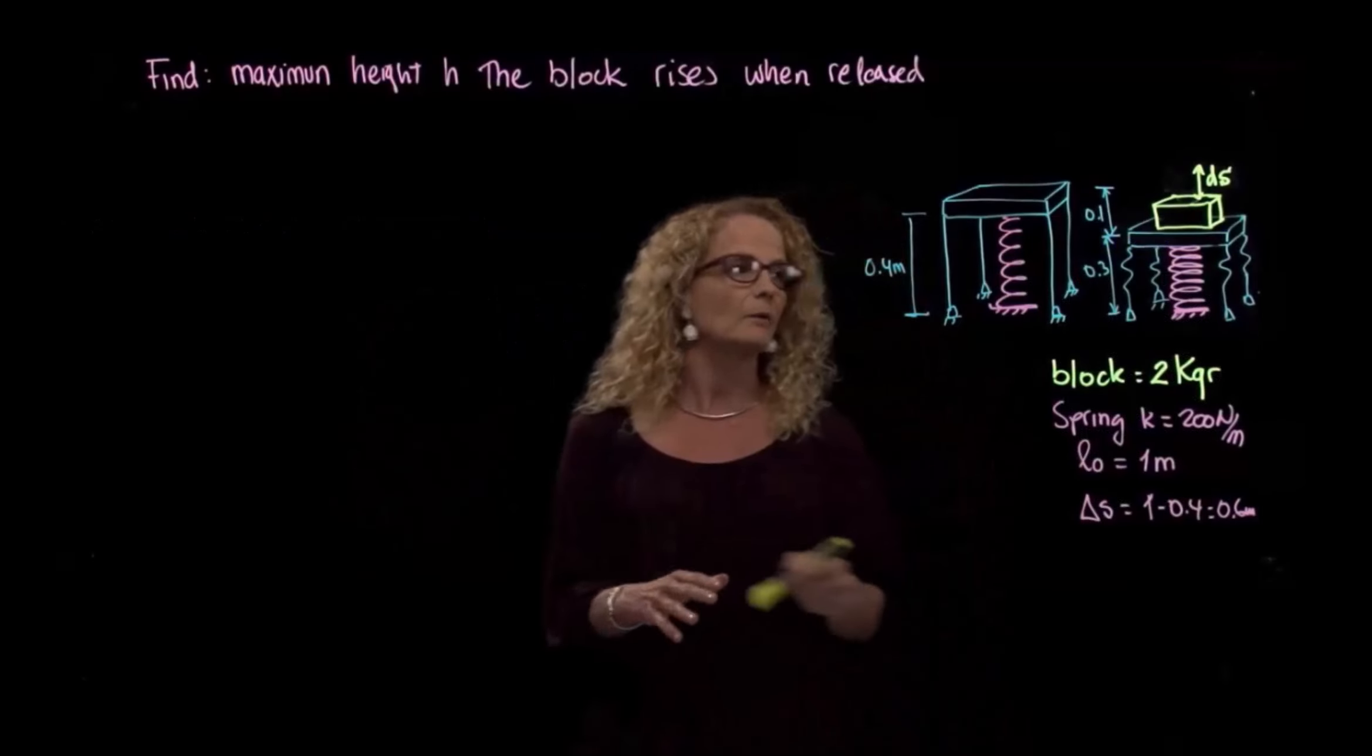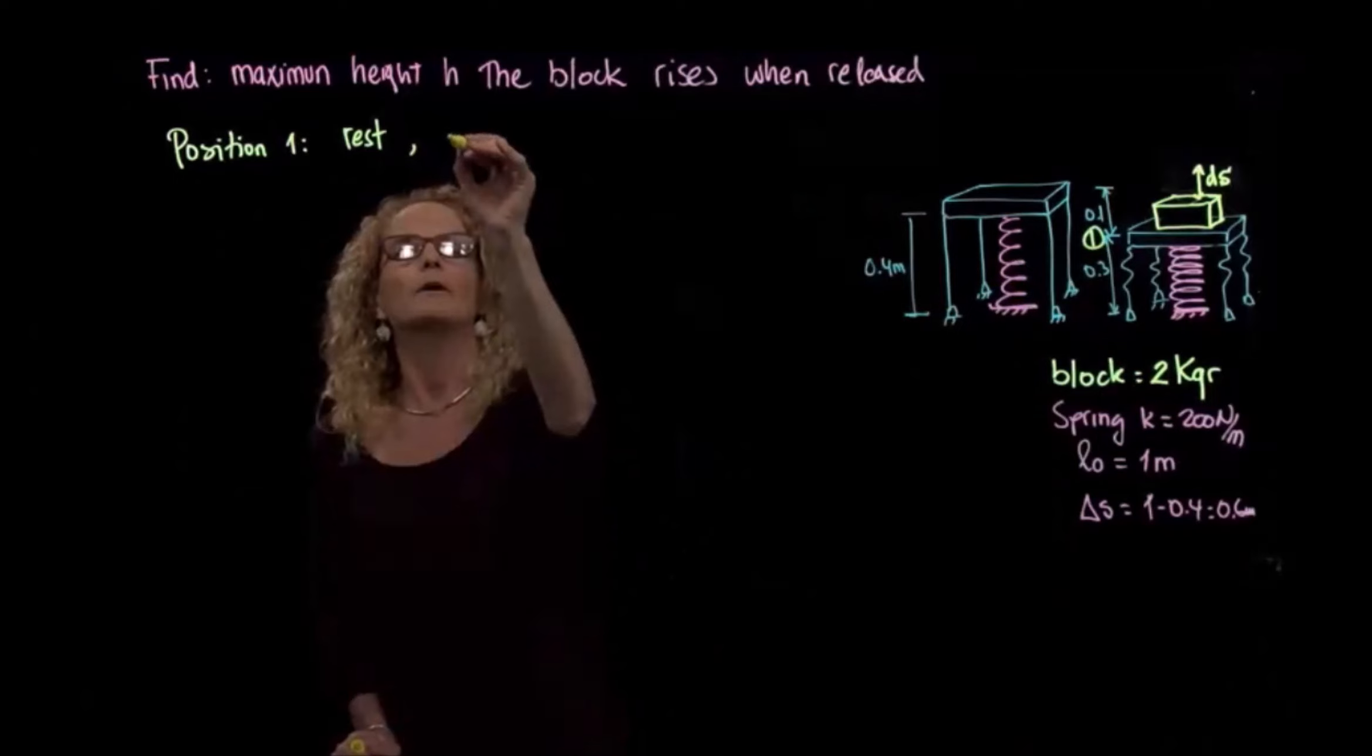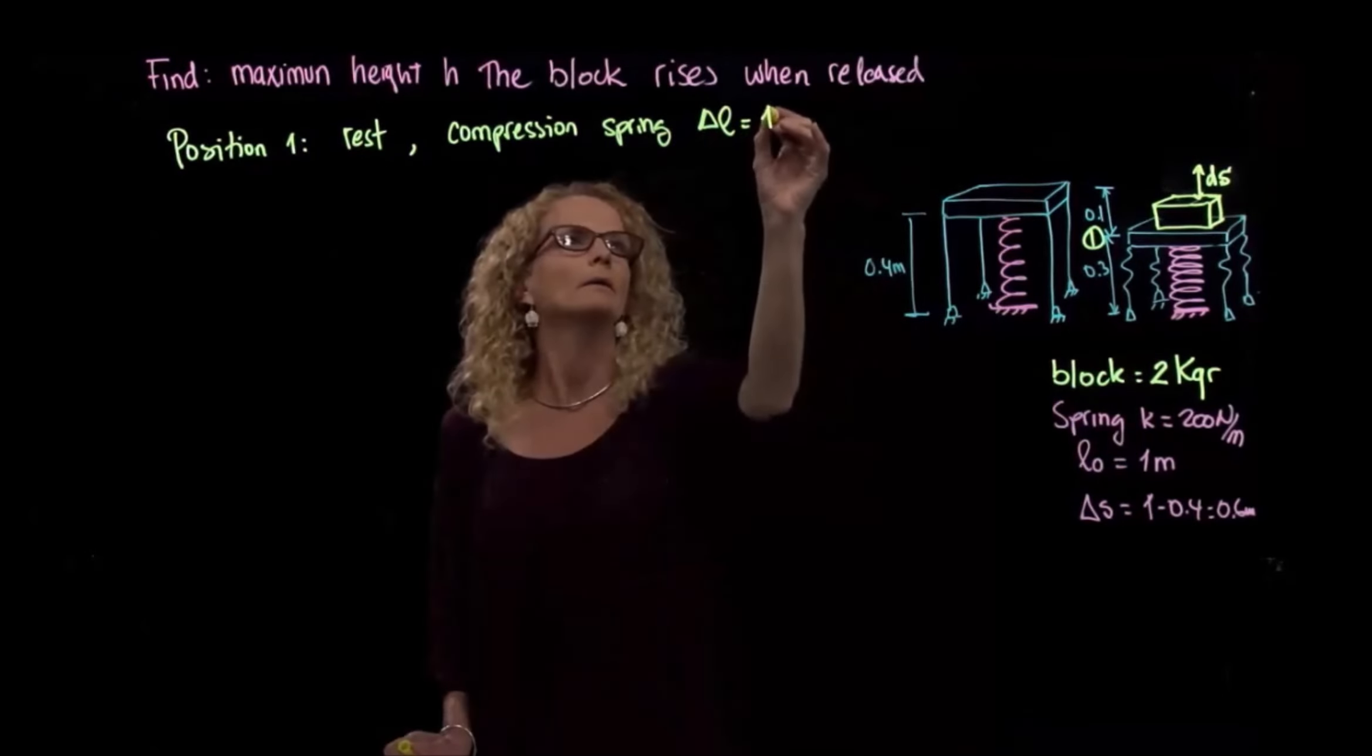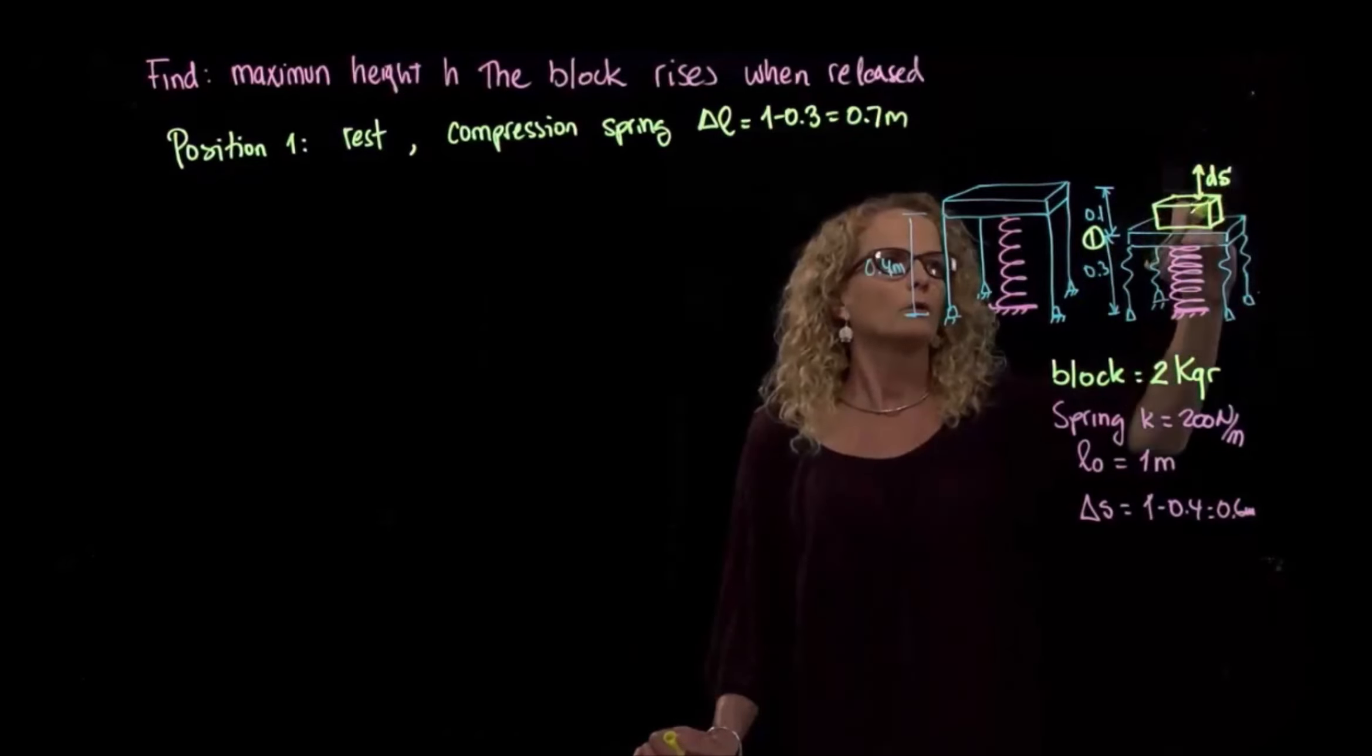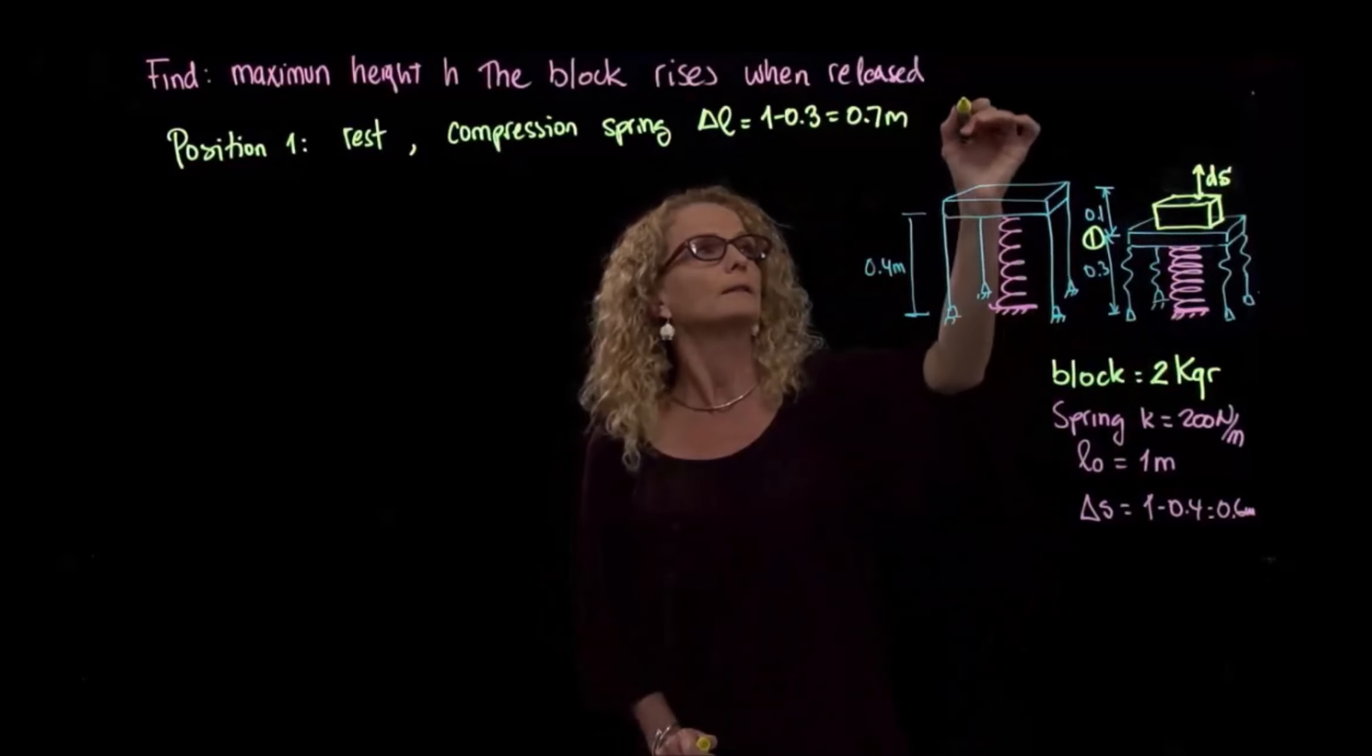So if we describe our positions, position one, we have rest, which is our position one, and we have our compression of the spring equals 1 minus 0.3, which is 0.7. So this is our position one because they are telling us that they compress the platform, and when they release, they want you to know the height of the block. So position two will be somewhere back to here, but the block over here.